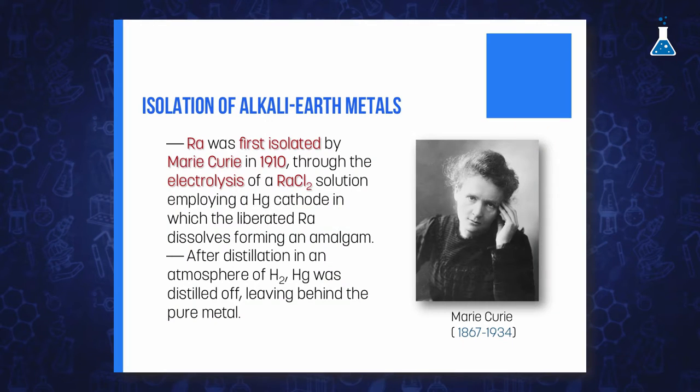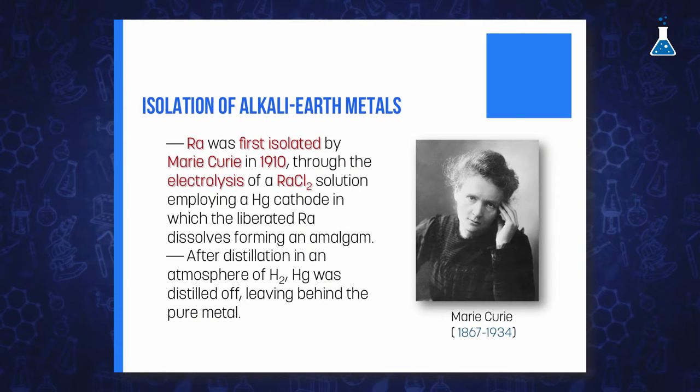Radium was first isolated by Marie Curie in 1910 through the electrolysis of radium chloride solution using a mercury cathode, in which the liberated radium is dissolved. In an atmosphere of hydrogen, the mercury was distilled off, leaving the pure metal behind.